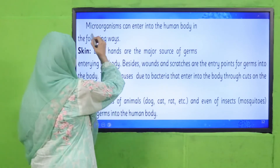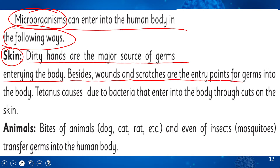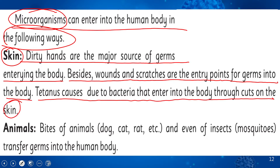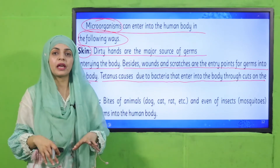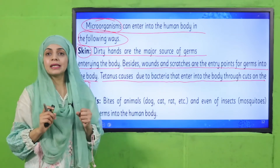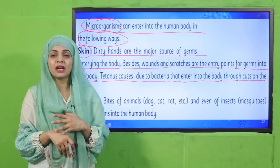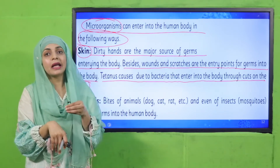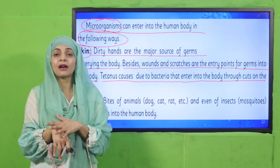Microorganisms or pathogens can enter the human body in the following ways. Our skin and dirty hands are a major source of germs entering the body. Wounds and scratches are entry points for germs. Tetanus is caused by bacteria that enter through cuts on the skin. We must keep washing our hands often. Any cut, wound, burn, or rash must be covered, otherwise germs can enter through that open area.